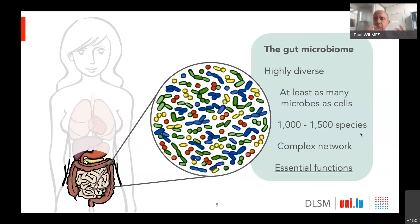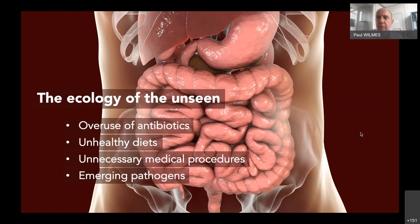These networks of interaction confer essential functions ranging from digestion of foodstuffs to stimulation of the immune system. These functions are absolutely essential to our own health and well-being. But over time, especially since the Industrial Revolution, we've been messing with this — not through voluntary actions, but we've indirectly affected what has been going on in the gut because of certain things we've done.